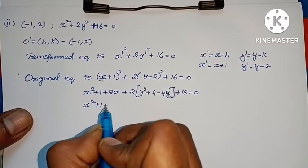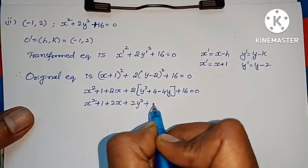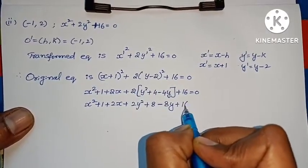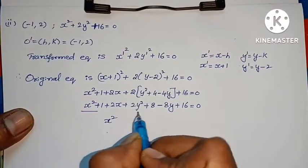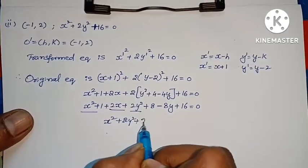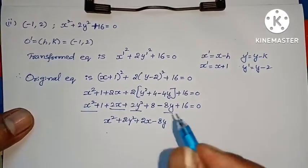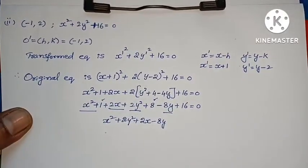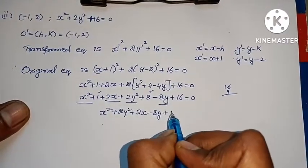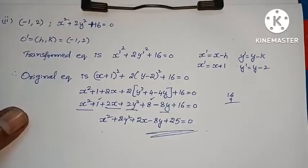Substituting: x square plus 1 plus 2x plus 2y square plus 4 — 2 times 4 is 8 — minus 4 times 2 is 8y plus 16 equals to 0. Therefore: x square plus 2y square plus 2x minus 8y plus constants — 8 plus 1 is 9, plus 16 plus 9 is 25 — equals to 0. The problem is solved, it is very simple.